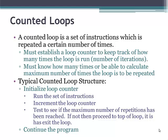A typical counted loop structure might look something like this. You'd initialize your loop counter before you enter the loop. Then you run your set of instructions. Increment the loop counter. Test to see if the maximum number of repetitions has been reached. If it has not been reached, then go back to the top of loop and start again. If it has been reached, exit the loop and continue the program.